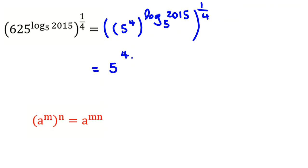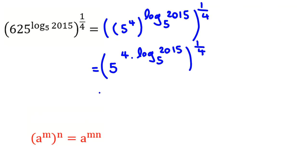Say 5 to the power of 4 times log 5 of 2015 to the 1 over 4. If we apply again power rule, 5 to the m n, we multiply this part and this part: 4 times log 5 of 2015 times 1 over 4. This 4 and this 4 will be cancelled. So it will be 5 to the log 5 of 2015.